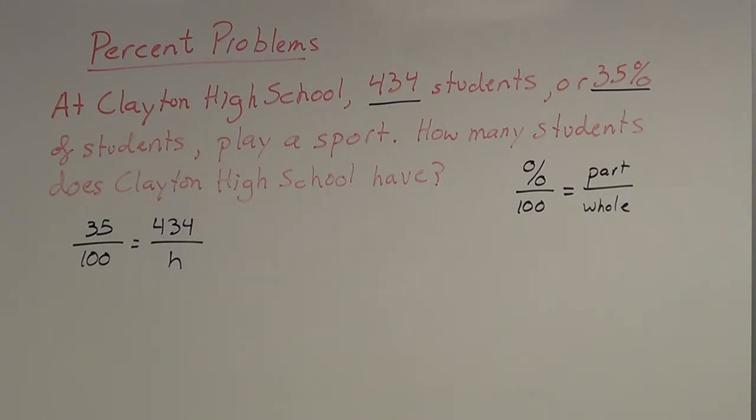Now, as before, this is a proportion type of problem. I'm going to use cross product to solve this, cross multiply. So, in this case, 35 times H equals 100 times 434. That's actually pretty easy to do, so I'm just going to write that out as 434 with two extra zeros on the end. 434 times 100 is 43,400. Just a little bit of simple math there.